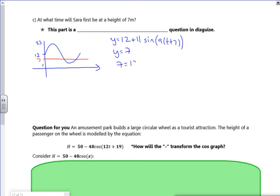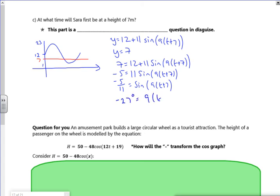So 7 is equal to 12 plus 11 sine of 9 of t plus 7. Using 7 in there is not ideal because you've got too many 7s. So if I take, I'm going to do some rearranging. So if I take this 12 away I get minus 5. Divide through by the 11. Doing the sine inverse of that. So that would give me minus 27 degrees for the 9 of t plus 7.